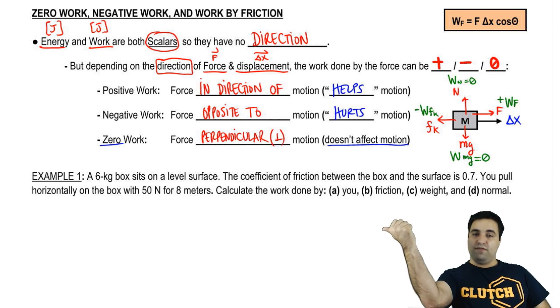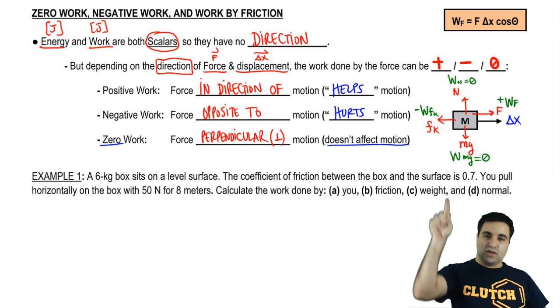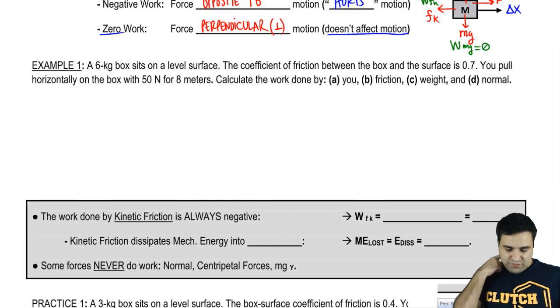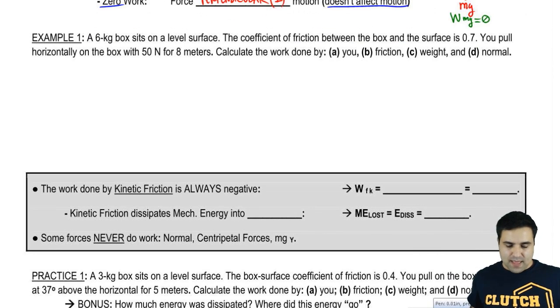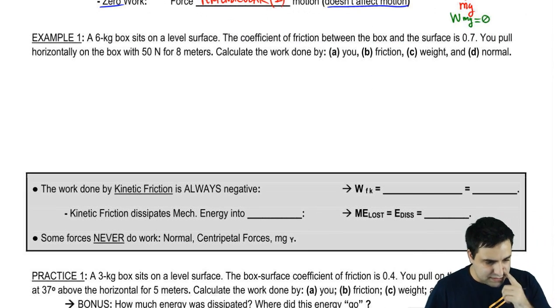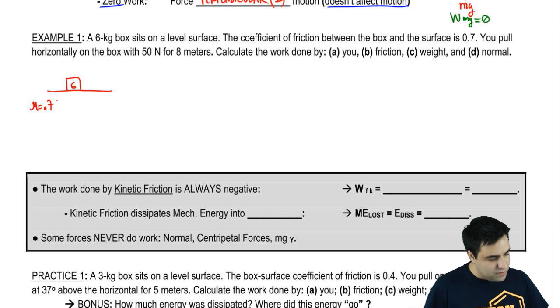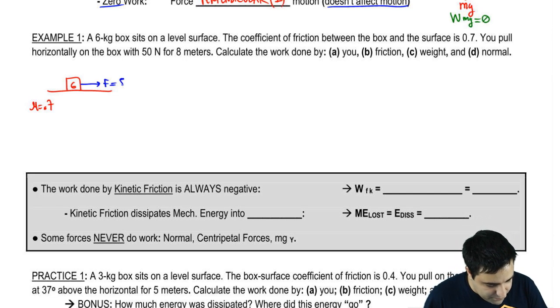Positive towards it, away from it or against it is negative. Perpendicular is zero. Let's do an example here. A 6-kilogram box sits on a level surface. The coefficient of friction between the box and the surface is 0.7. You pull horizontally on it with a force of 50 N for a distance of 8 meters.